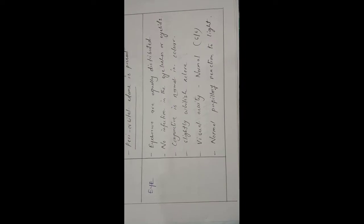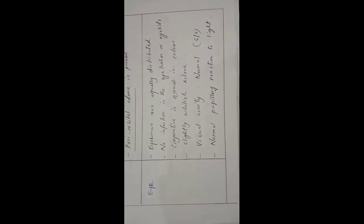Eye: eyebrows are equally distributed, no infection in the eyelashes or eyelids, conjunctiva is normal in color — slightly white. Sclera is clear. Visual acuity is normal. Normal pupillary reaction to light.